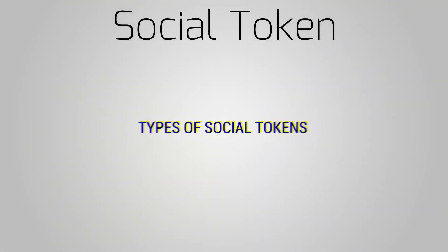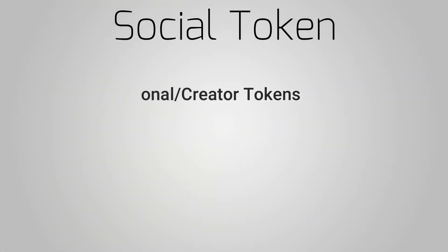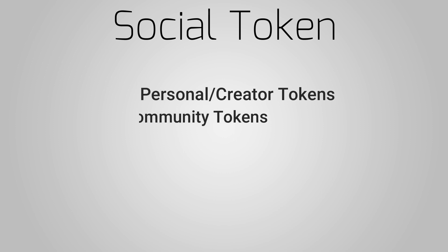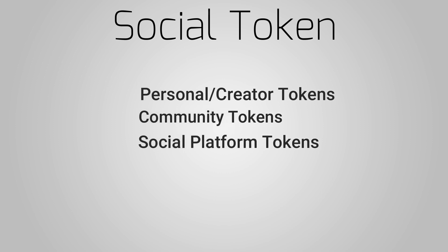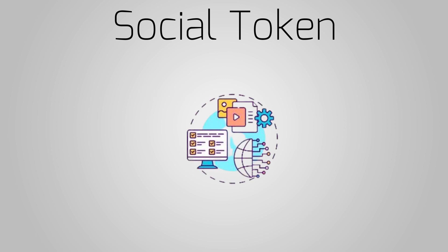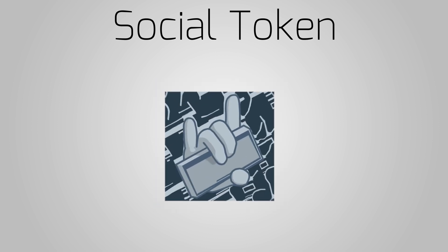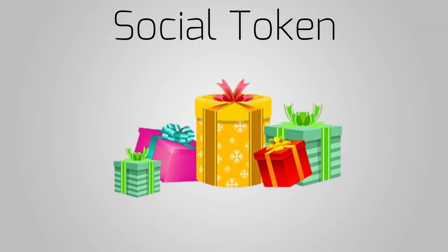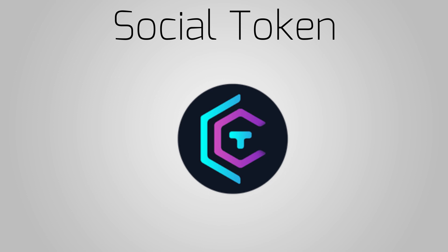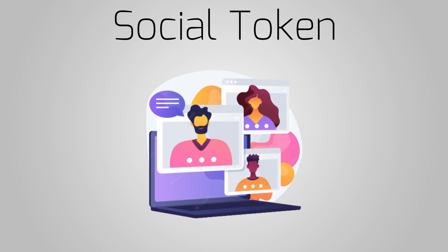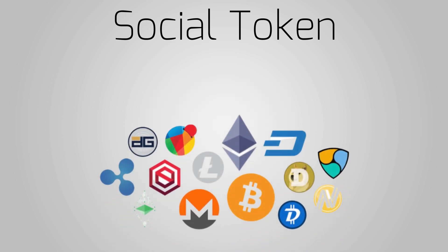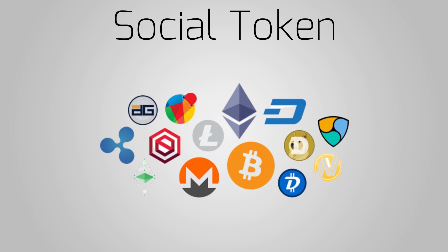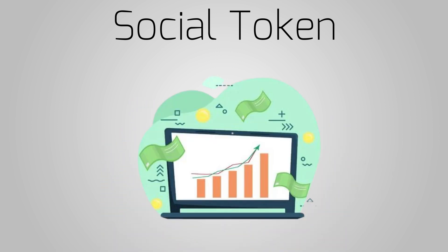There are three types of social tokens: personal or creator tokens, community tokens, and social platform tokens. Personal or creator tokens are digital assets a creator sells in exchange for services such as meet and greets or video calls — for example, holders of rapper Lil Yachty's tokens can receive gift boxes his mom specially packaged. Community tokens engage online community members through exclusive benefits like early access to limited edition merch or access to private events. Social platform tokens are crypto tokens that allow holders to benefit from the growth of the platform where they are issued.